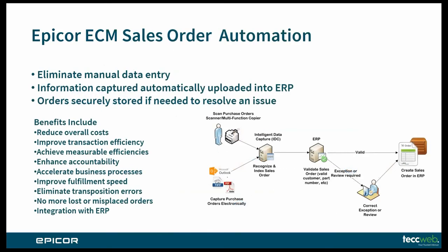Sales order automation uses Intelligent Data Capture to automatically capture and extract data from customer purchase orders. The workflow then accepts and indexes the purchase order, executes data lookups, confirms customer information and validation such as credit checks and part number verification, and detects missing, incomplete, or incorrect data. Epicor ECM lets you identify exceptions and automatically route them to a user to resolve the issue. If all conditions are met and there are no exceptions, the sales order is created in ERP.